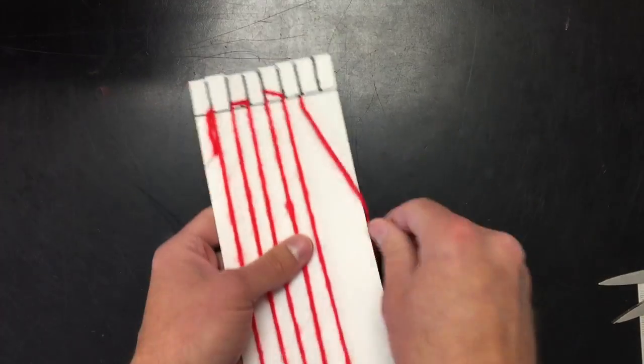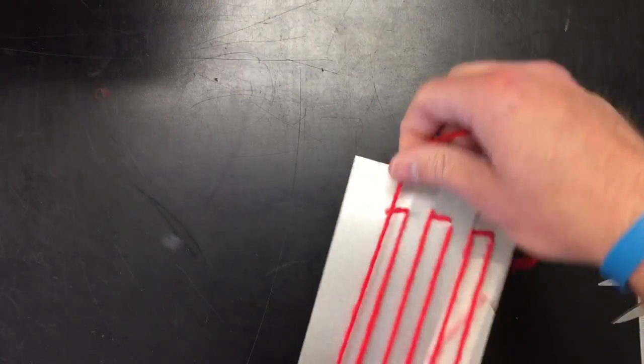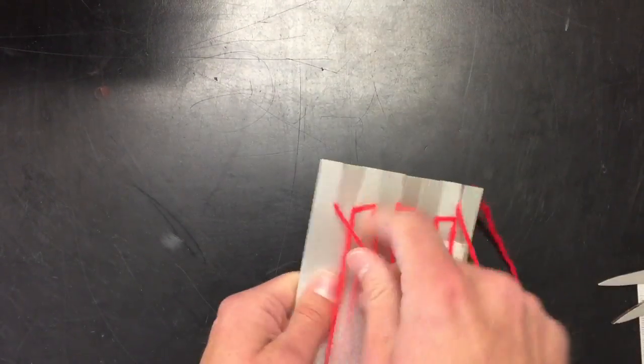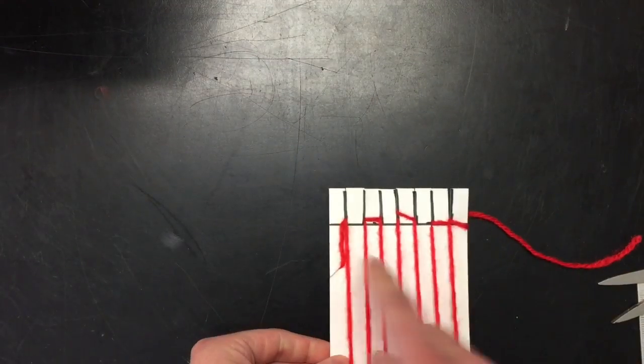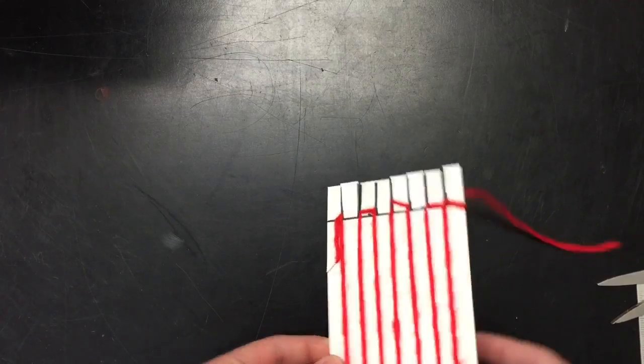Once you get all the way to the very end, oops, a little knot there. Better hit pause. Figure that out. Once you come all the way to the end, you're gonna wrap it around the edge of the eighth notch up top. That'll kind of secure your thread in place. Sweet. Good job.